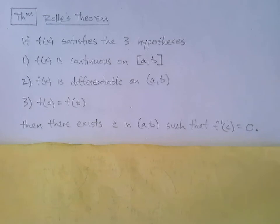If f(x) satisfies the three hypotheses, and here they are. Hypothesis number one, f(x) is continuous on an interval from a to b. Number two, f(x) is differentiable on (a,b), meaning that the derivative exists everywhere between a and b.